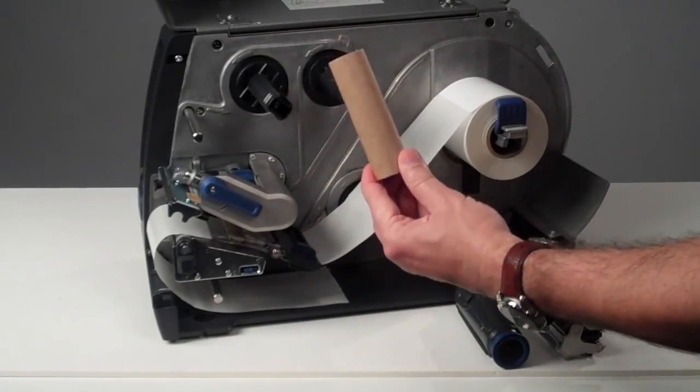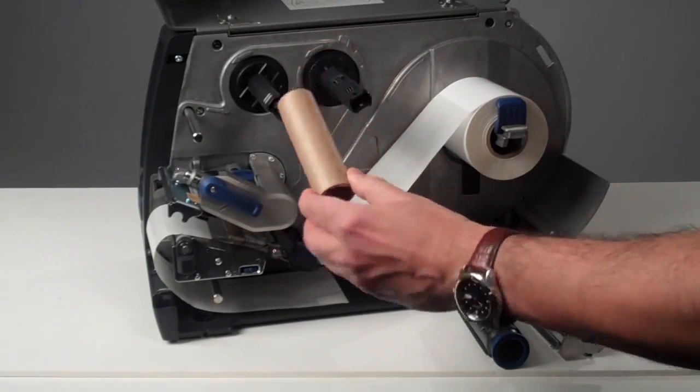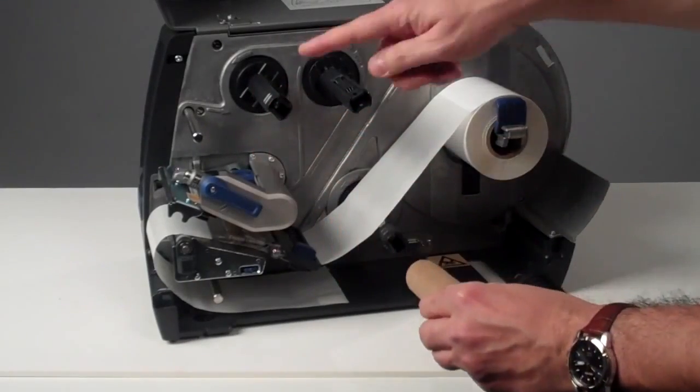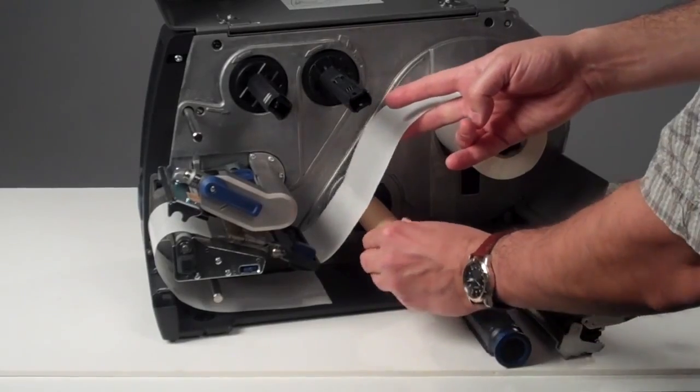The second way is to use the cardboard core. This is basically the same core that you will use for ribbon loading. As the spindles are the same, you can use the same core for rewinding the liner.